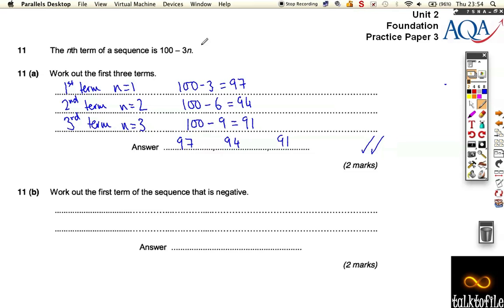Well, we've got to be in the three times table. So if n is 33, you're going to be doing 100 minus 99, aren't you? And that's going to give you 1.